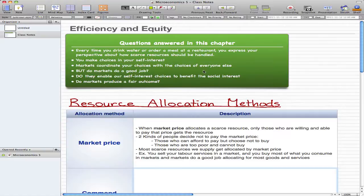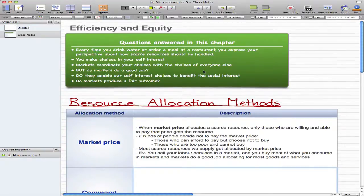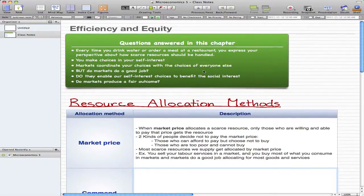The questions we're trying to ask are: do markets do a good job and do they enable our self-interest choices to benefit the social interest? And lastly, do markets produce a fair outcome? Those are the kind of questions we want to answer when we talk about efficiency and equity.